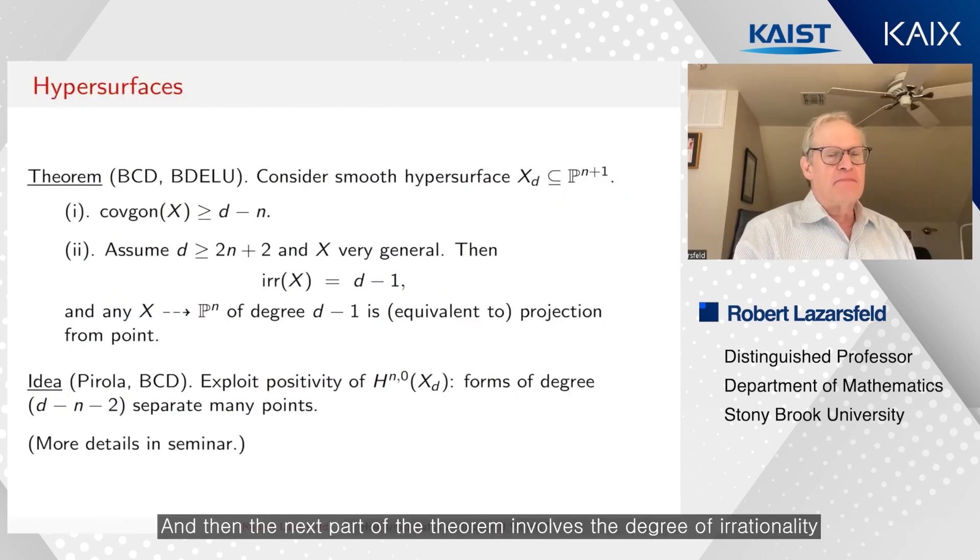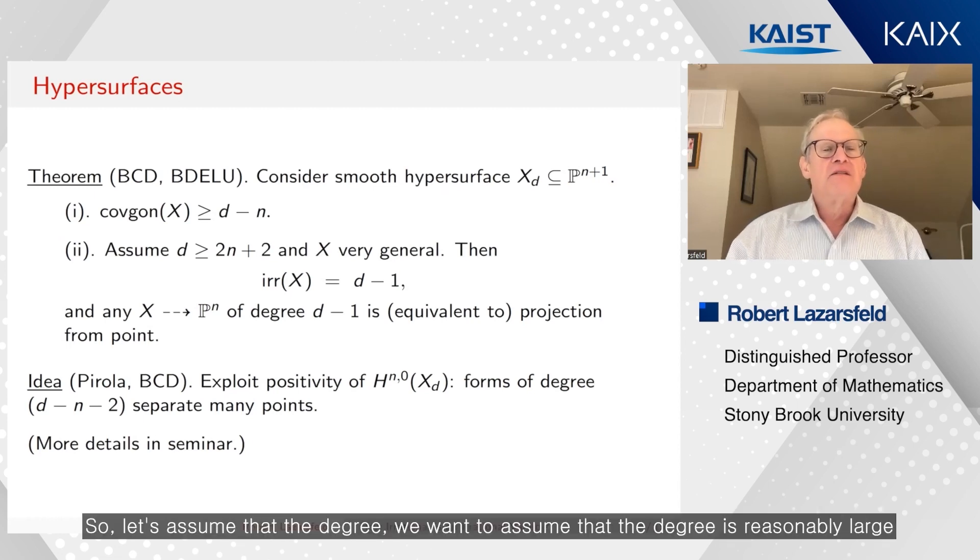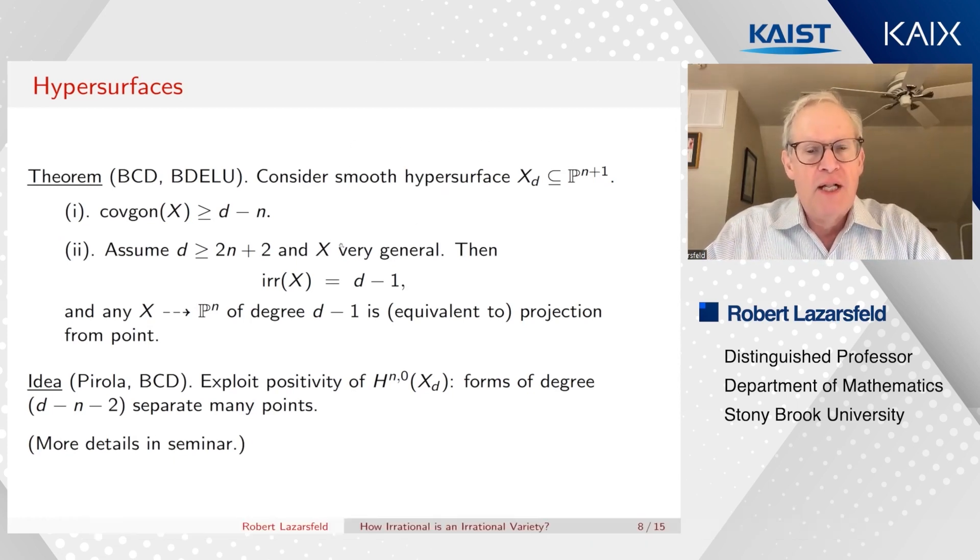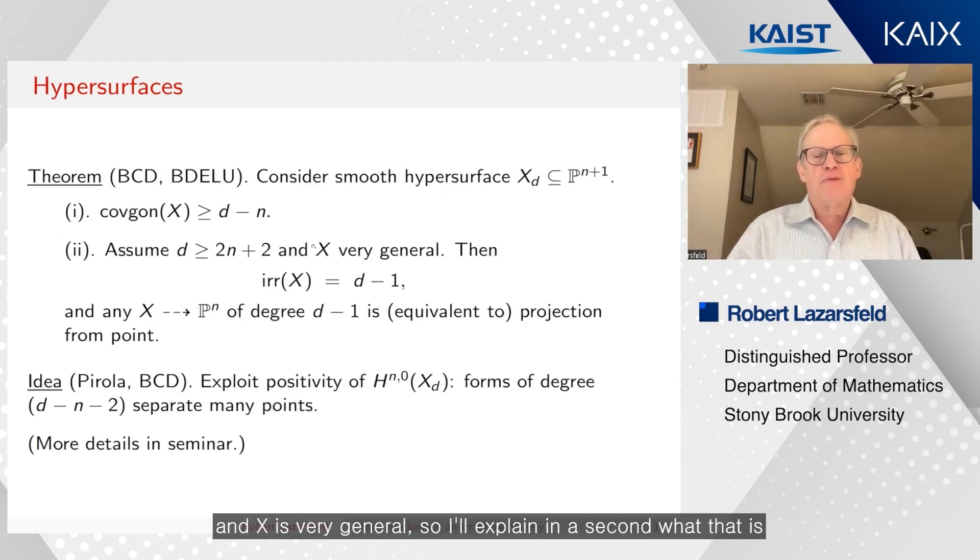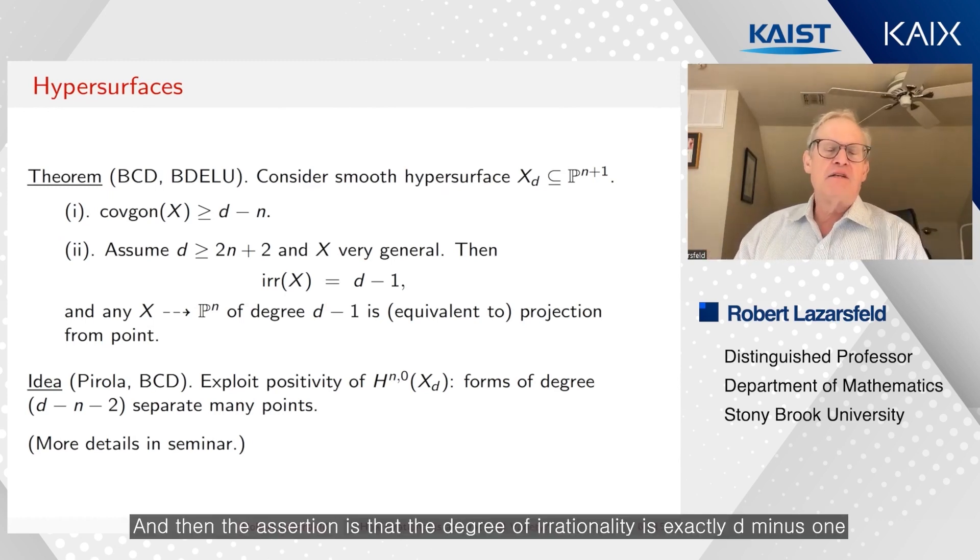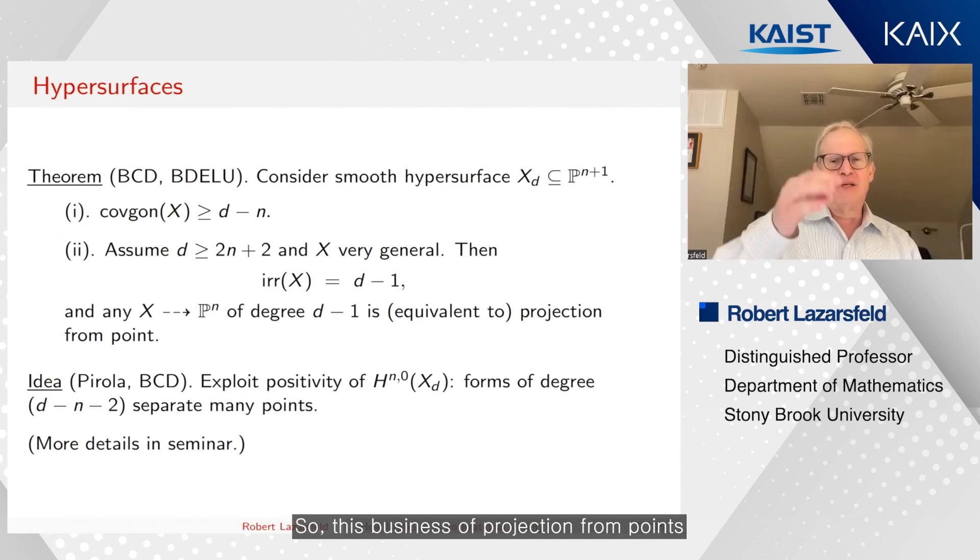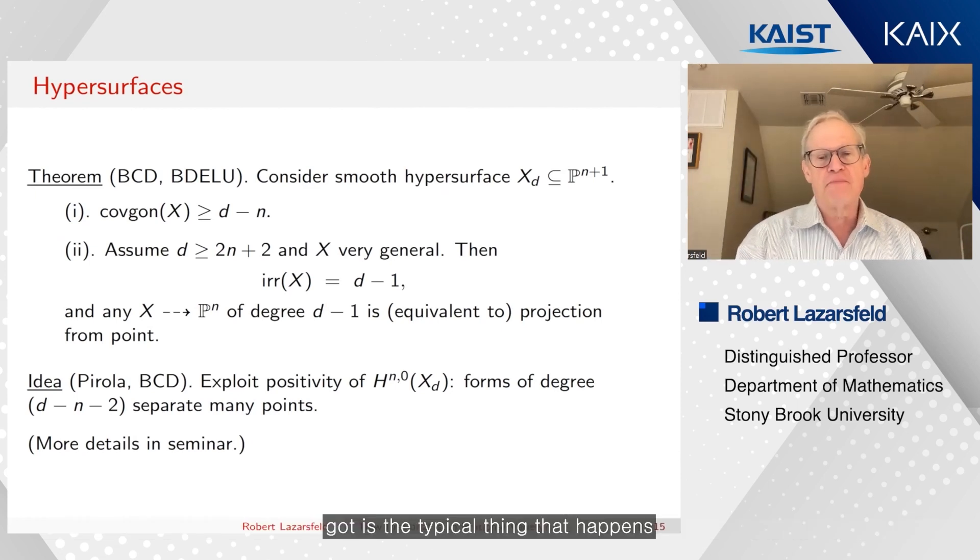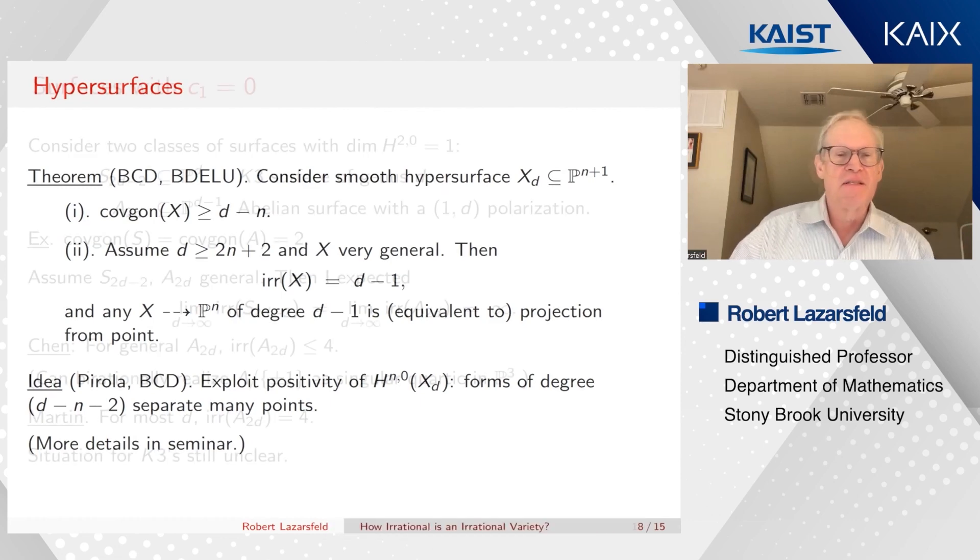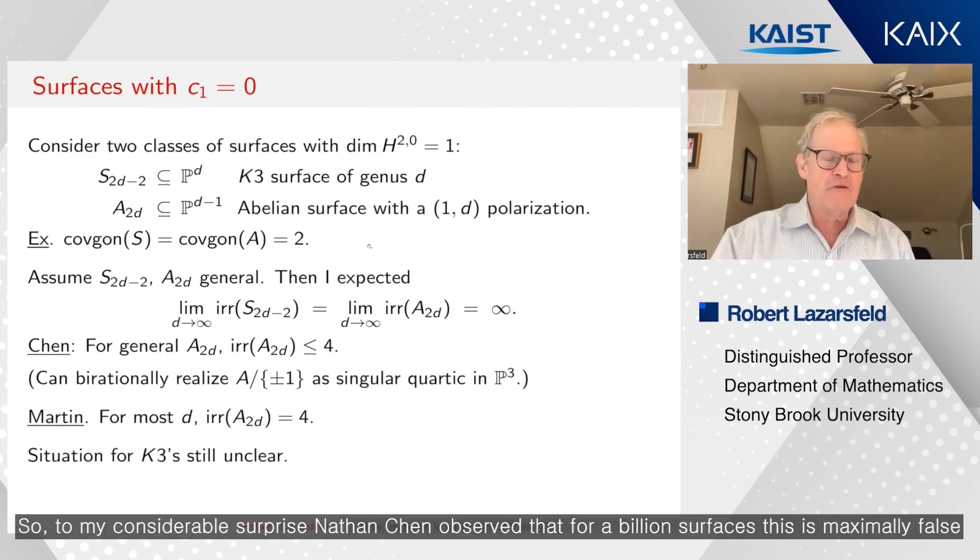And then the next part of the theorem involves the degree of irrationality. So let's assume that the degree is reasonably large, at least 2n+2, and X is very general. So I'll explain in a second what that is. And then the assertion is that the degree of irrationality is exactly d-1. And the maps you get of degree d-1 are birationally equivalent to just projection from points. So this business of projection from points is the typical thing that happens.